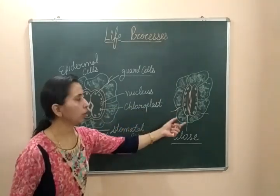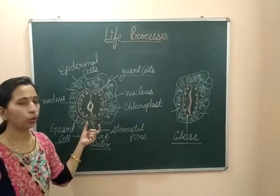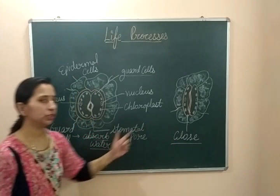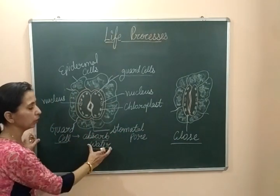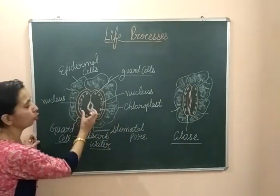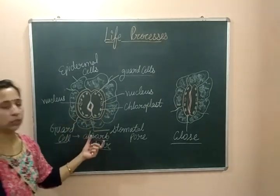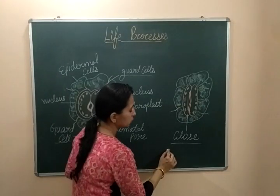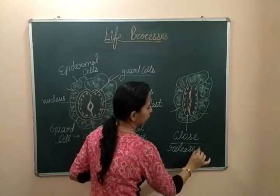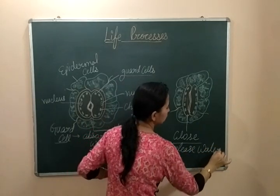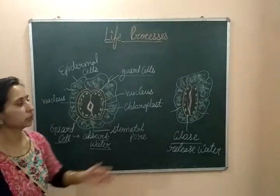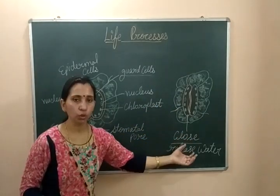Let us discuss one more time how stomatas get open and closed. When guard cells absorb water, due to the absorption of water, the stomatal pore gets opened and stomatas are known as open stomata. When guard cells release water, they get shrinked, and in this case the stomata is closed.